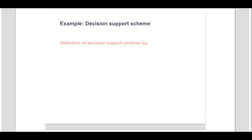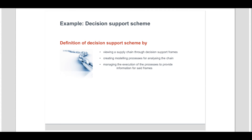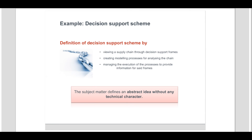In this example, a decision support scheme is defined by viewing a supply chain through decision support frames, creating modelling processes for analyzing the chain, and managing the execution of the modelling processes to provide information for said frames. The subject matter defines an abstract idea as to how one might wish to provide information in a decision-making process. The idea is defined without any hint of technical consideration and therefore lacks any technical character. There is no possibility of forming any technical problem from the claim and it is therefore considered to be a non-invention as a business method as such.